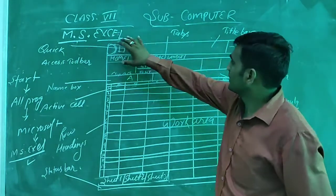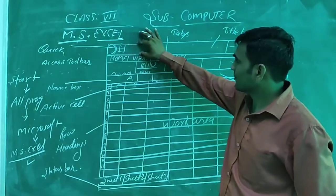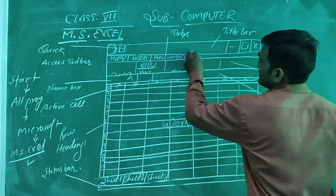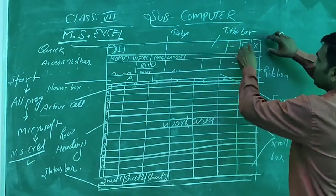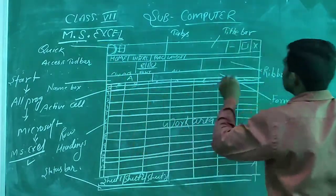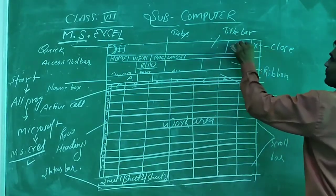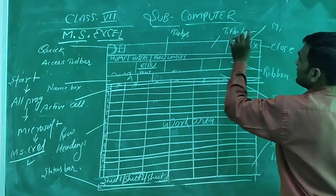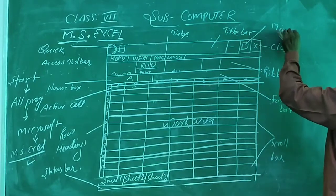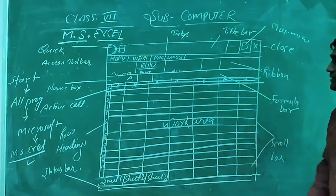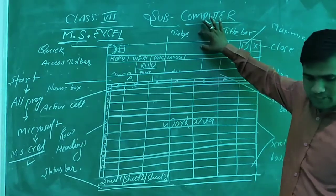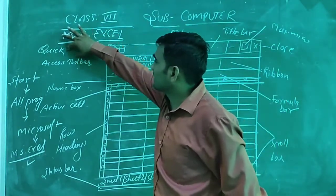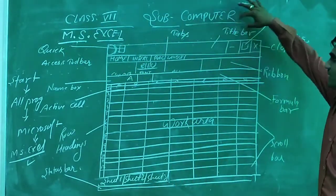In this window, at the top we can see a bar. This bar indicates some information at the top, with some buttons on the right side and some buttons on the left side. This bar is called the title bar.